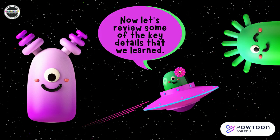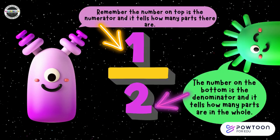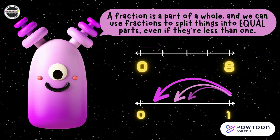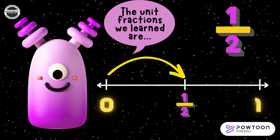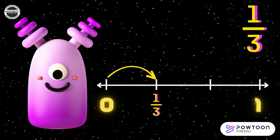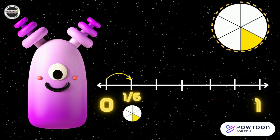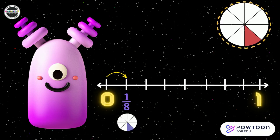Now let's review some of the key details that we learned. Remember, the number on top is the numerator and it tells how many parts there are. The number on the bottom is the denominator and it tells how many parts are in the whole. A fraction is a part of a whole and we can use fractions to split things into equal parts, even if they're less than one. The line in the middle of the numerator and the denominator tells you to divide. The unit fractions we learned are one half, one third, one fourth, one sixth, and one eighth.